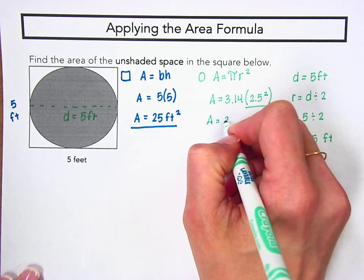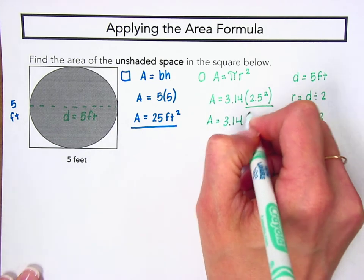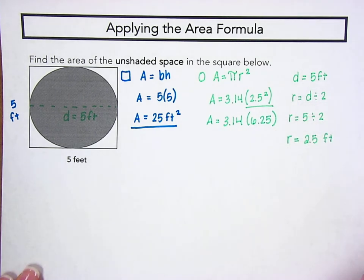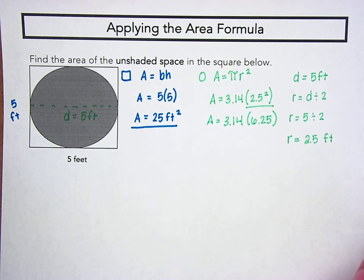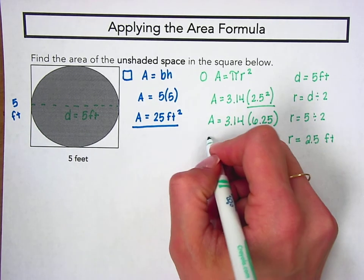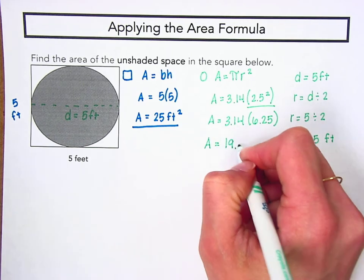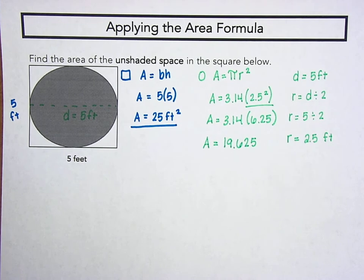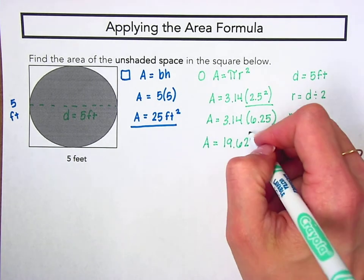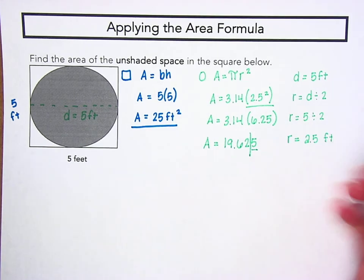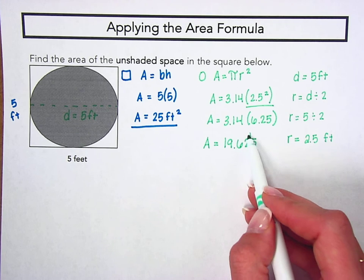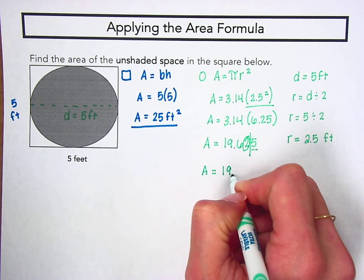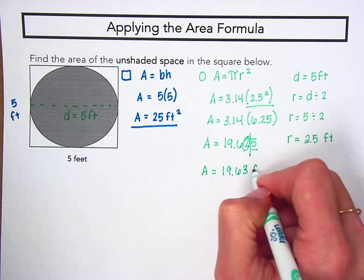2.5 times 2.5 is equal to 6.25, and we still need to multiply that by our pi. So, 6.25 times 3.14 gives us 19.625, and we're going to go ahead and round this number to the nearest hundredth. So that means we want two digits after our decimal point. When we look at this value, because it's 5 or above, we're going to give this number a shove. So, the area of our circle is approximately 19.63 square feet.